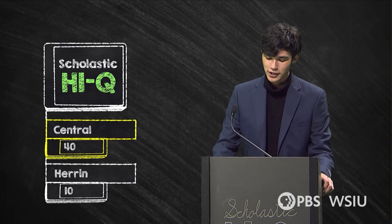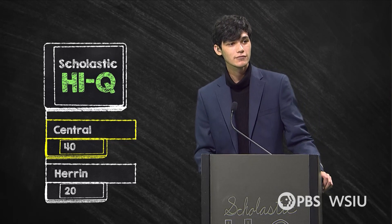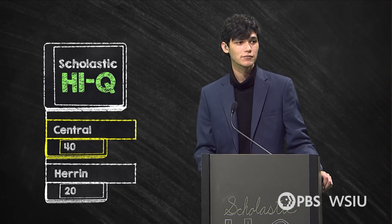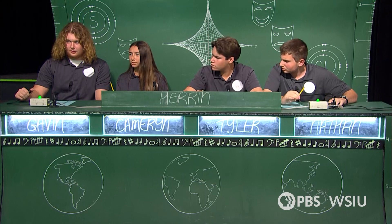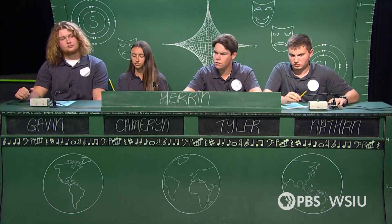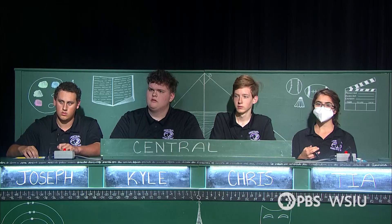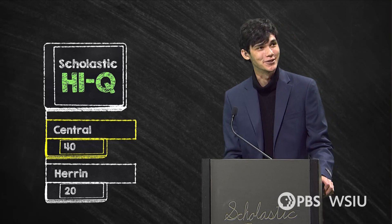For your bonus: which of the classical simple machines can be created by wrapping a tilted inclined plane around a cylinder? Initial answer of 'Pulley' is incorrect. Central steals with 'Screw' — correct, and quite possibly the most complicated way to describe a screw.